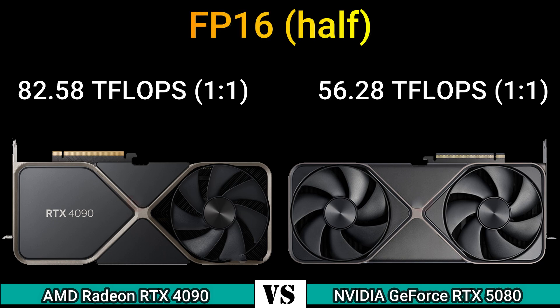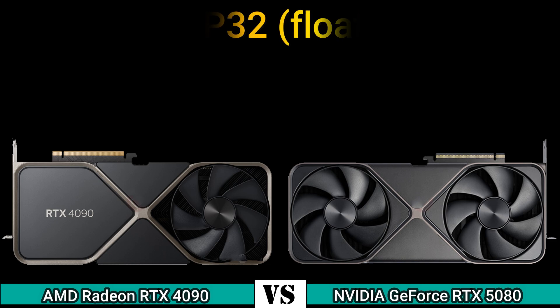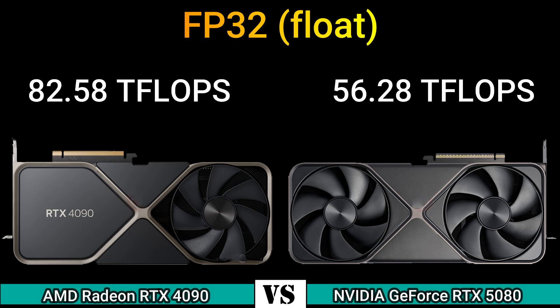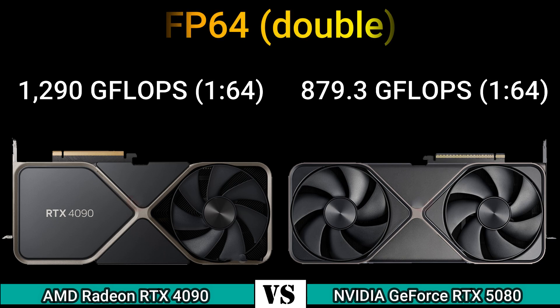FP16 half: 82.58 TFLOPS 1:1 and 56.28 TFLOPS 1:1. FP32 float: 82.58 TFLOPS and 56.28 TFLOPS. FP64 double: 1290 GFLOPS 1:64 and 879.3 GFLOPS 1:64.